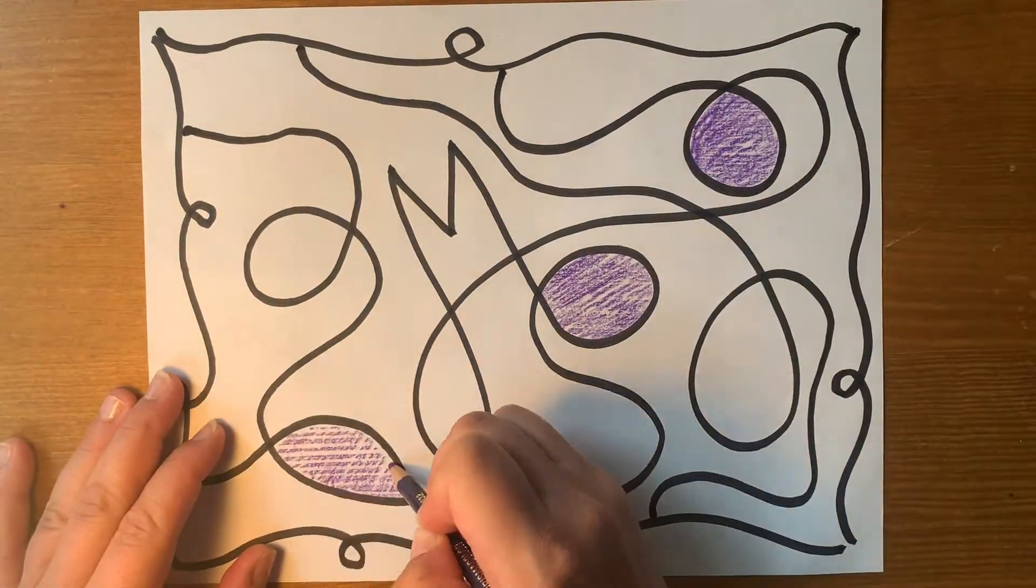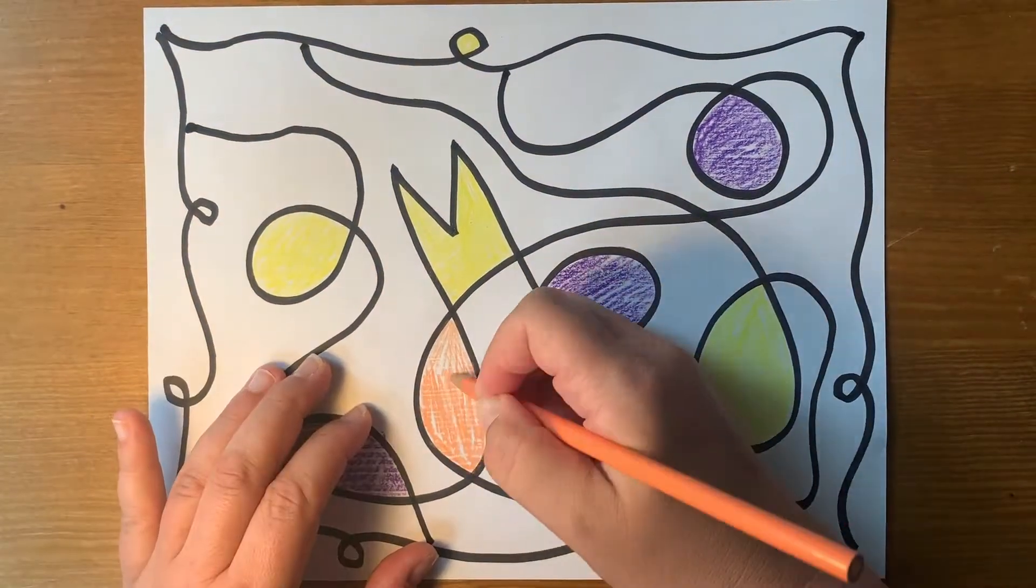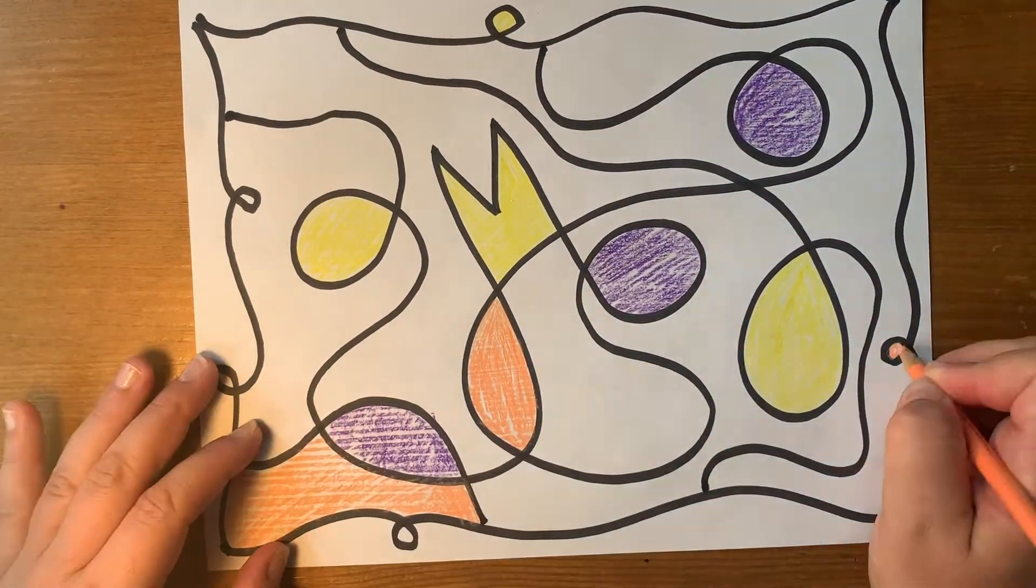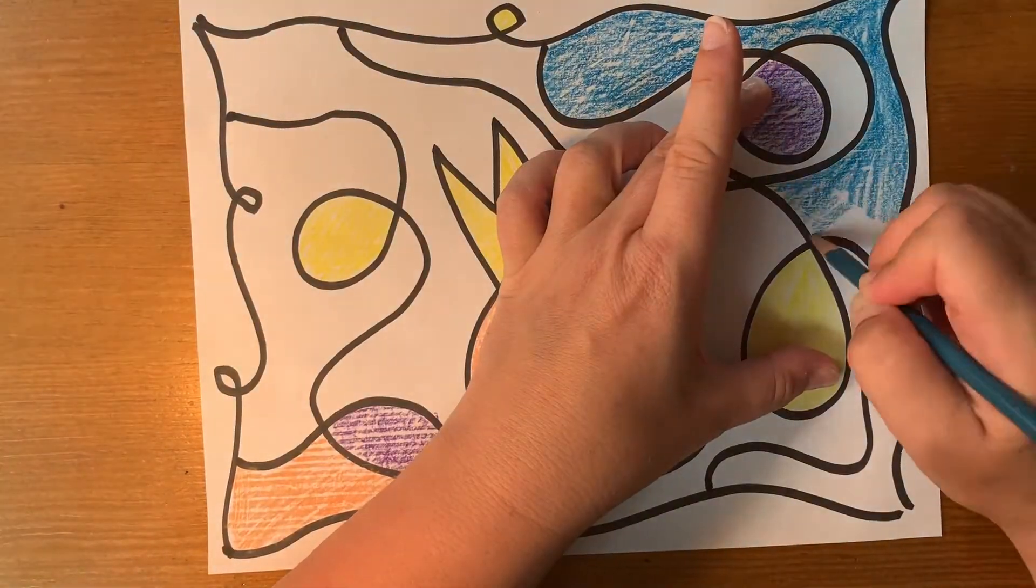Next, color in your shapes. Use as many or as little colors as you want, and it doesn't matter what kind of art utensil you use. If you have crayons, use those. Colored pencils, use those. Markers, you can use those too.